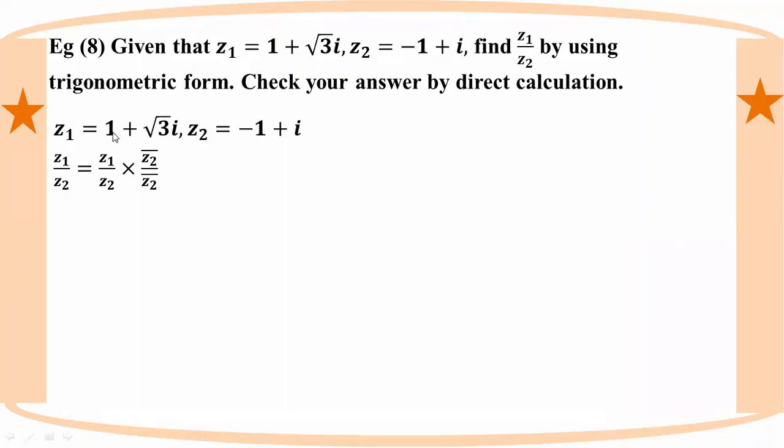So z1 equals 1 plus root 3 i, and z2 equals minus 1 plus i.